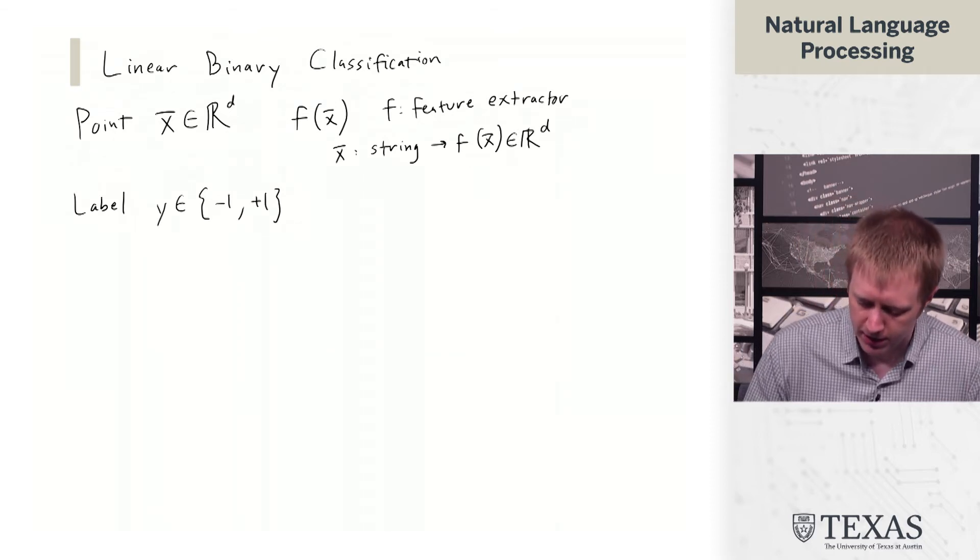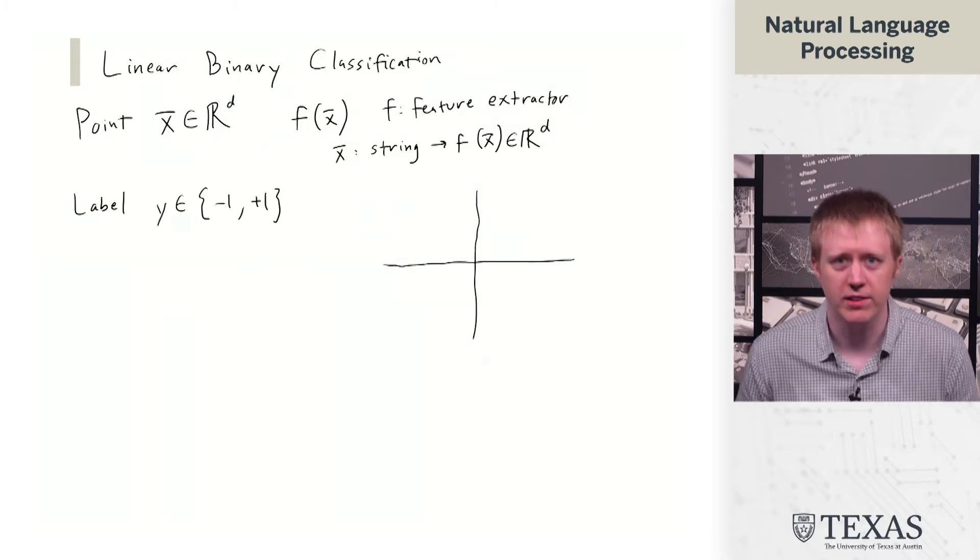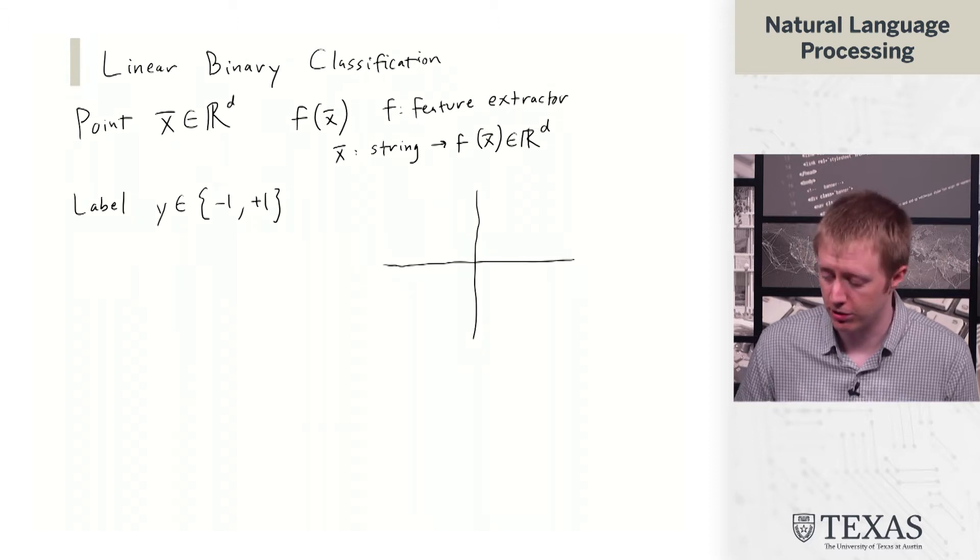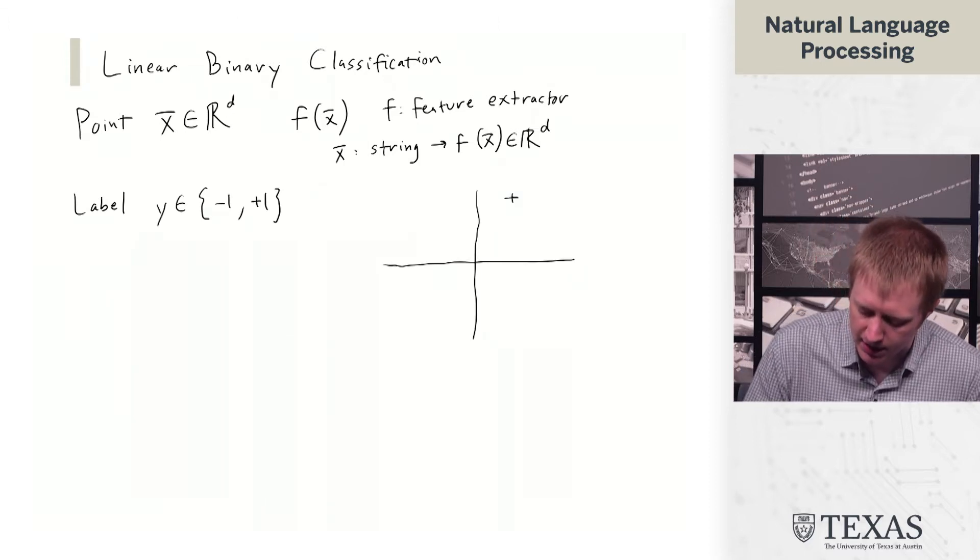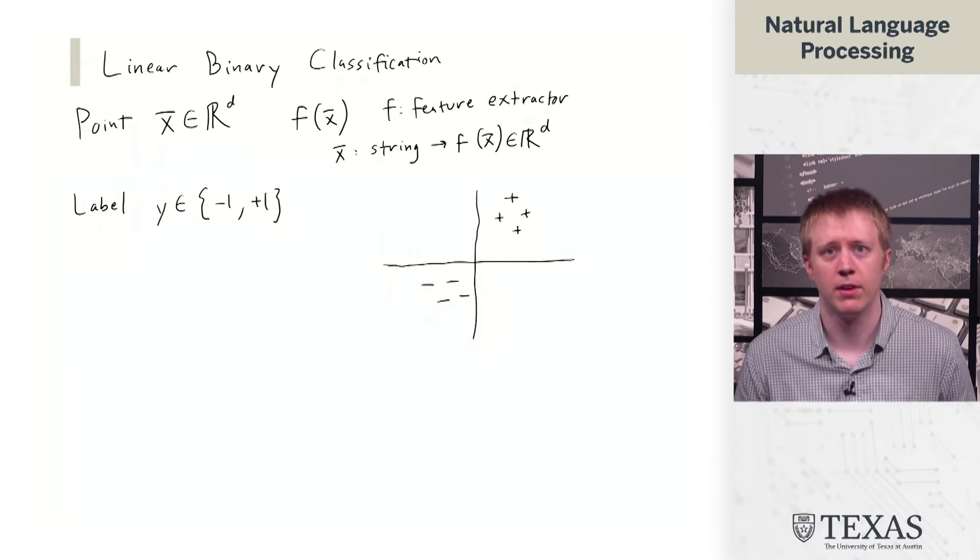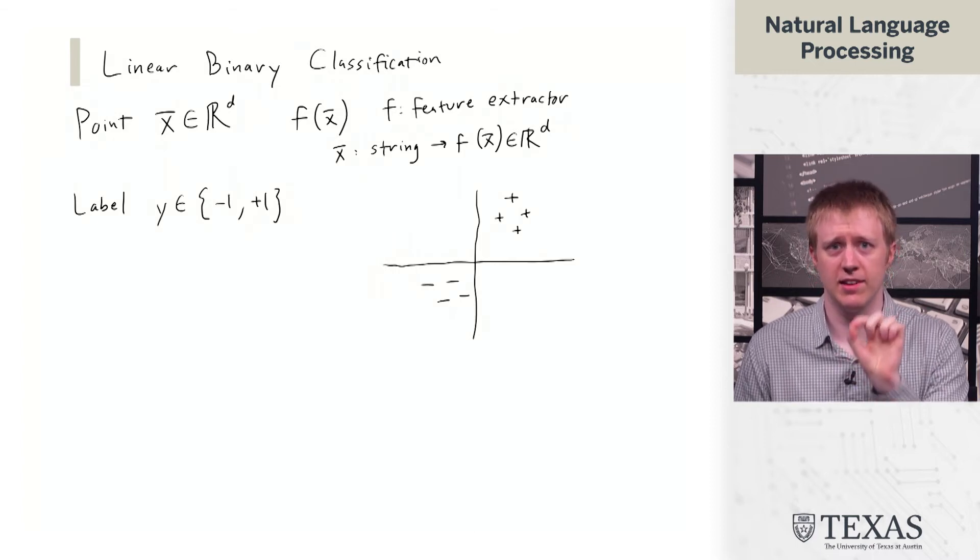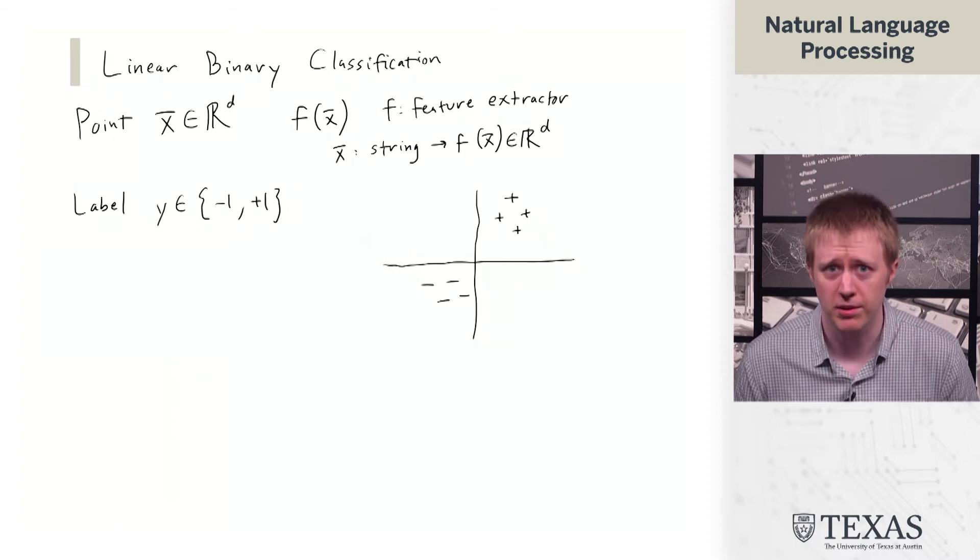The way we can think about this is that we've got a set of points. This is going to be a two-dimensional feature space. We're going to draw some pluses up here and some minuses down here. Each of these represents one of these x's, and whether it's plus or minus represents the label.